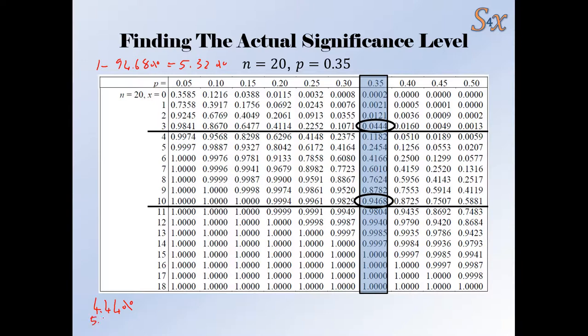So we had 5.32%. To find the actual significance level, we add those probabilities together and we get 9.76%. That is our actual significance level.